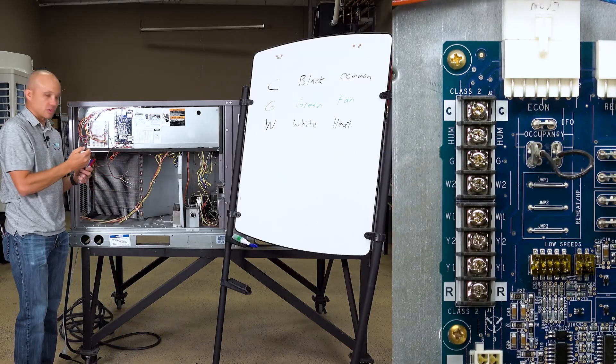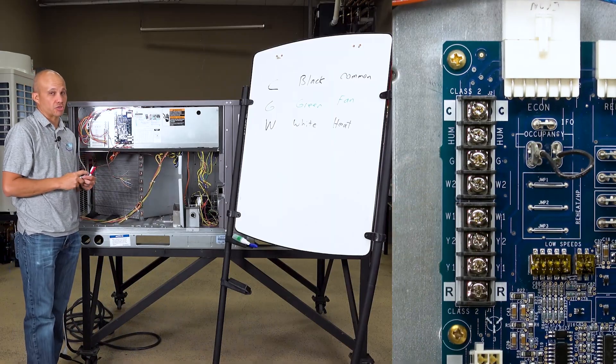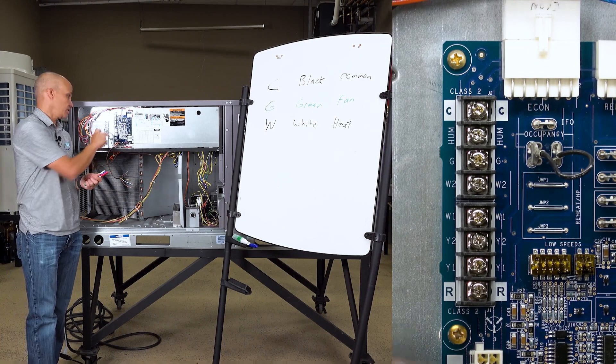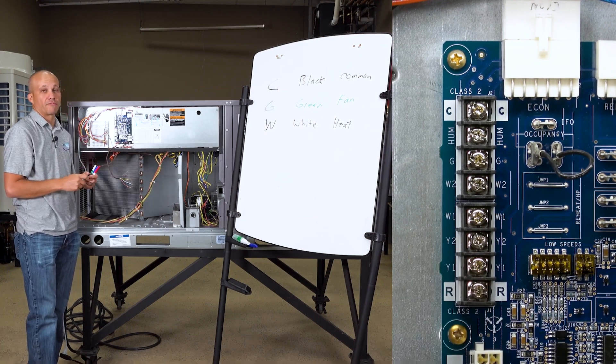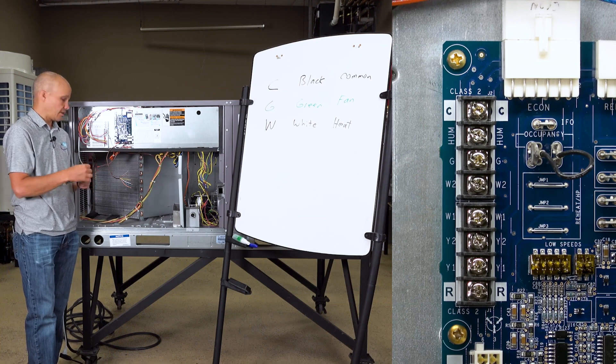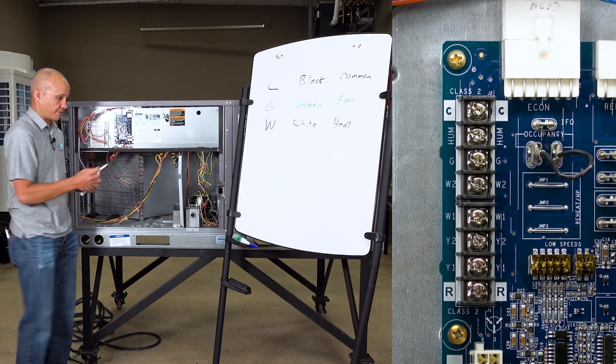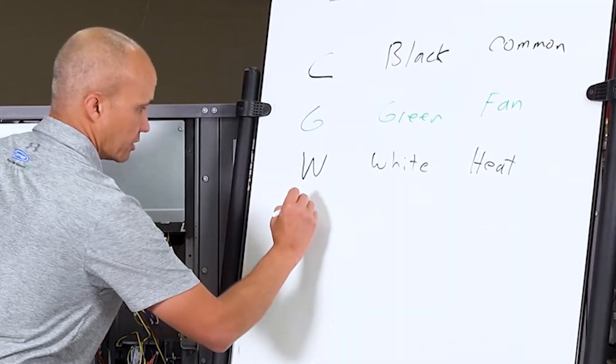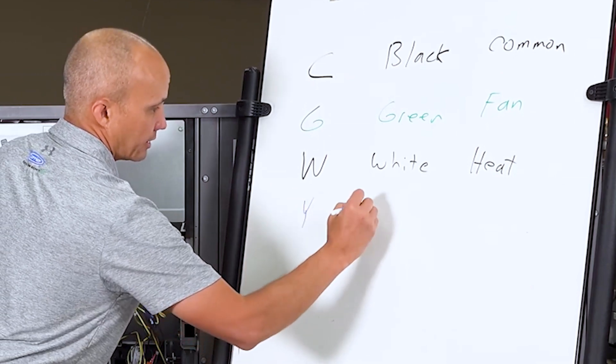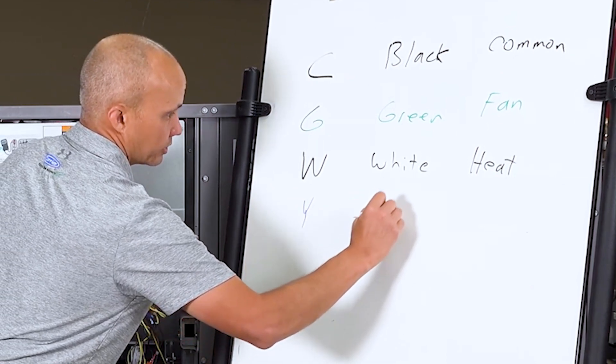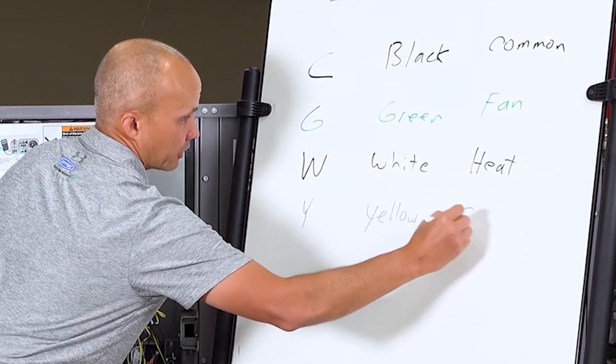Next one below that is Y2, that's second stage cooling. We don't have that in this application. And we have Y1, that is going to be first stage of cooling. I don't have the ability to use Y for yellow on the whiteboard here, so we'll use a Y in blue. It'll be yellow and that'll be for cooling.